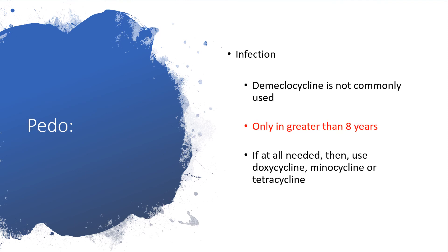In the pediatric age group for treatment of infection, demeclocycline is not commonly used. Even when administered, it is given only in children greater than eight years old. As a matter of fact, I don't prescribe any tetracyclines to any child, but if needed, use doxycycline, minocycline, or tetracycline. In other words, avoid demeclocycline in children as much as possible.